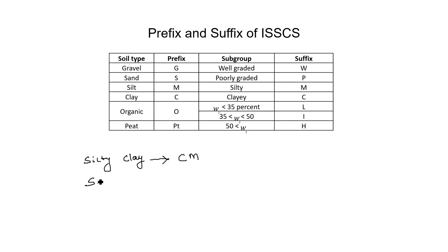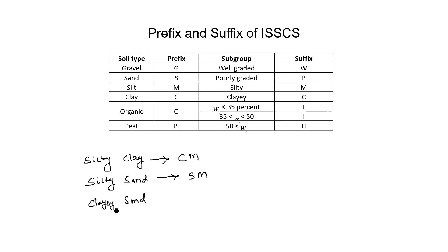If we wish to write silty sand, the prefix of sand is written first — sand is S and for silt we use M — so this will be SM. Similarly, for clay sand, the prefix of sand is written first: sand is S and the prefix of clay is C, so this will be SC.